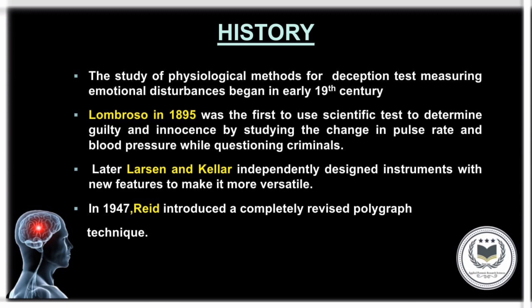The next topic is history. The study of physiological methods for deception test measuring emotional disturbance begins in the early 19th century. Earlier, subjects thought to have committed some social wrong were asked to submit to an ordeal. In this ordeal, a person's arm was placed in boiling water, or they were made to chew rice, or placed on a cruel balancing apparatus. The common belief was that if a person's arm blistered, if he choked on rice, or if he swayed the balance, he was presumed to be guilty.